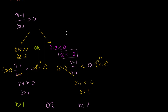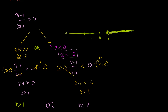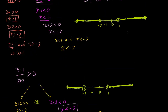So our final result is x is greater than 1 or x is less than minus 2 — the exact same result we got with the first method. You can graph it on the number line: open circle at 1 going right, and open circle at minus 2 going left. Whichever method you find easier, both require careful thought about what happens when you multiply or divide by positive or negative numbers.